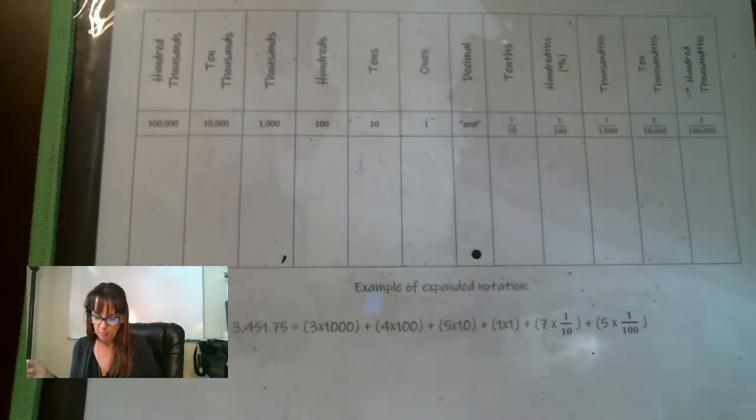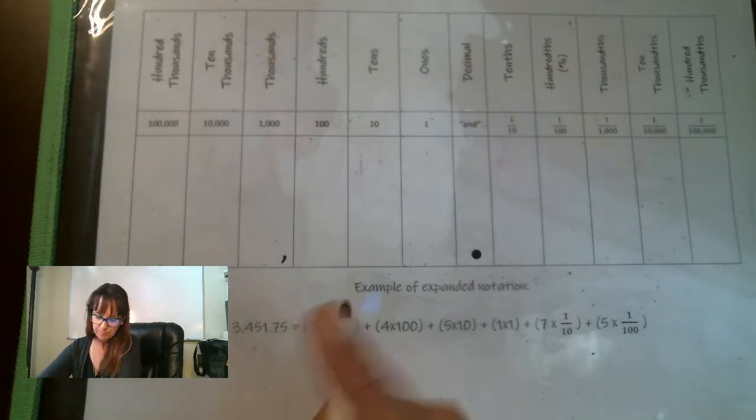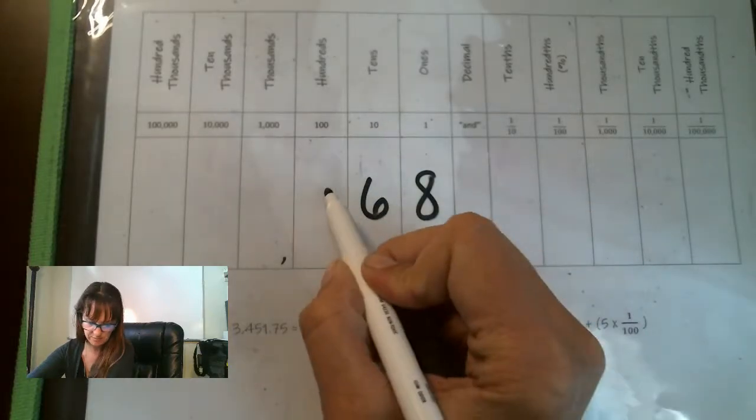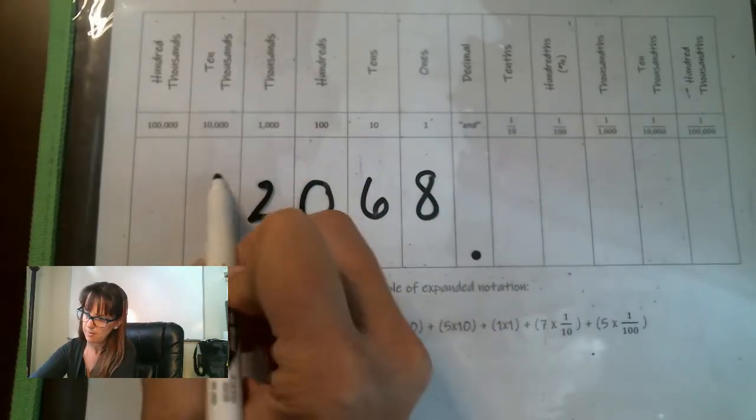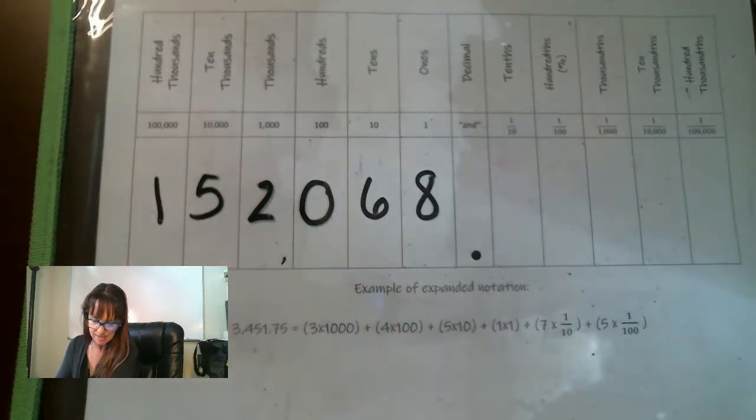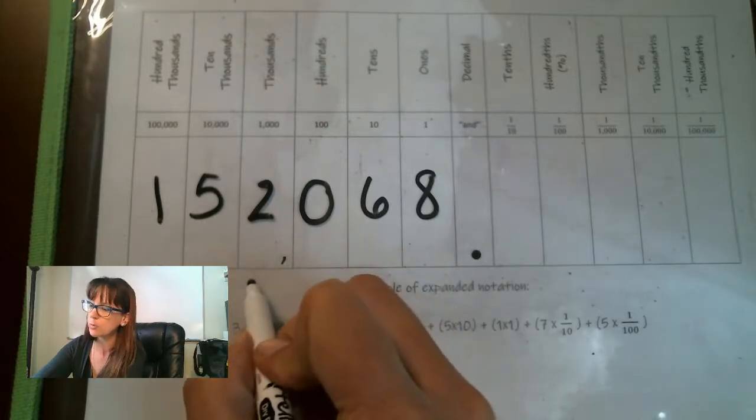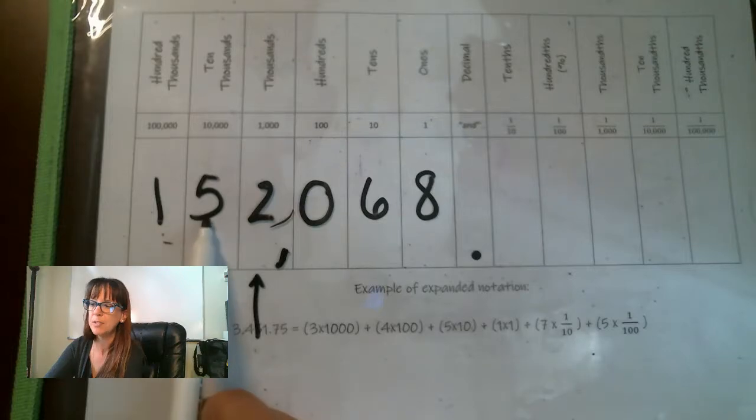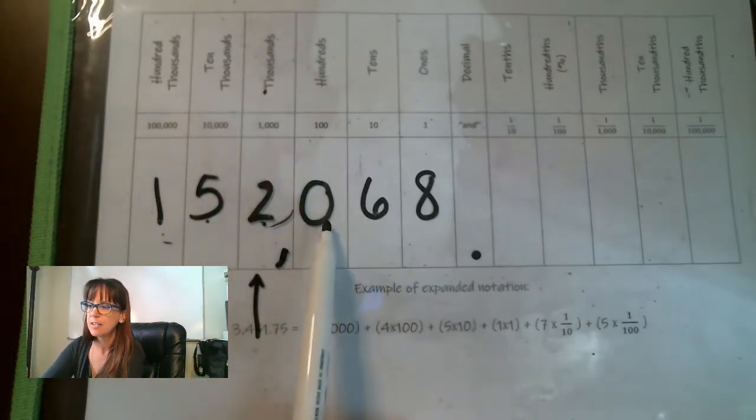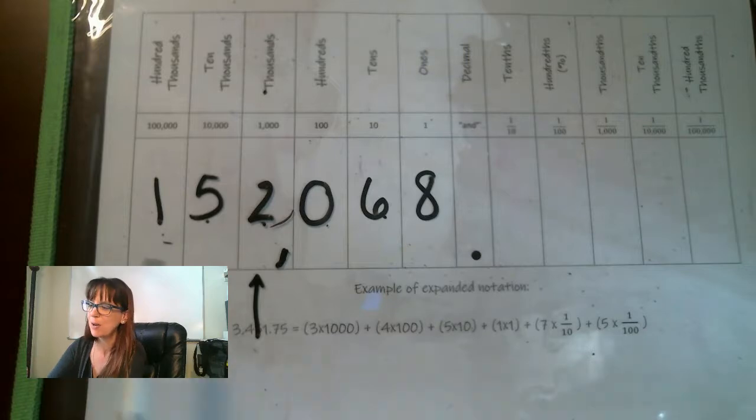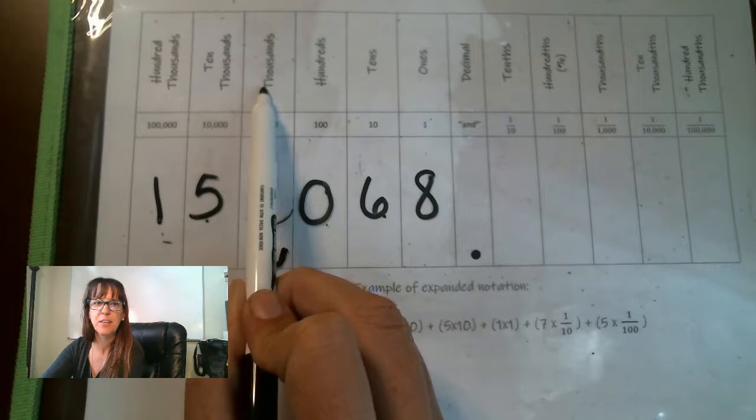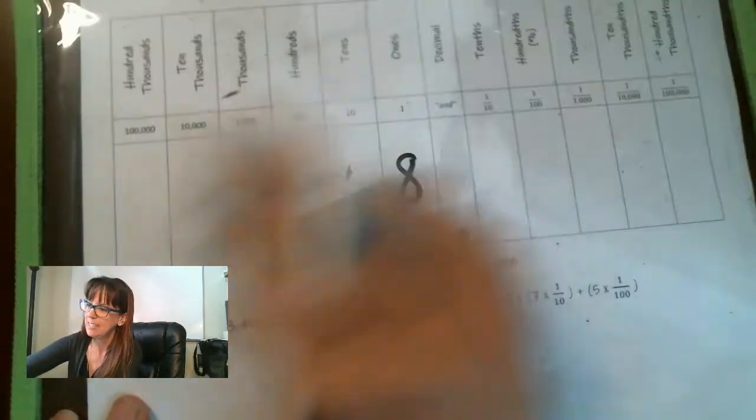Okay, so for A, in the number, it helps me to write them backwards. I don't know if that helps you. 2, 5, and 1. It's asking, in the number 1, 5, 2, 0, 6, 8, looking at B.